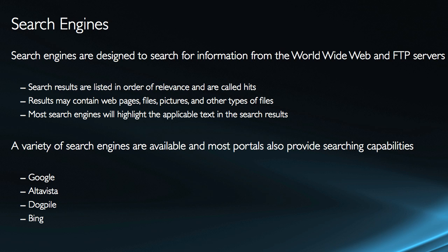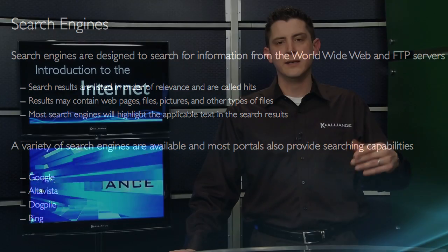The results can contain web pages, files, pictures, media, and any other types of files. Most search engines will also highlight the applicable text in the search results. So if I searched for 'internet basics,' then 'internet basics' might be highlighted in the hits that are displayed.